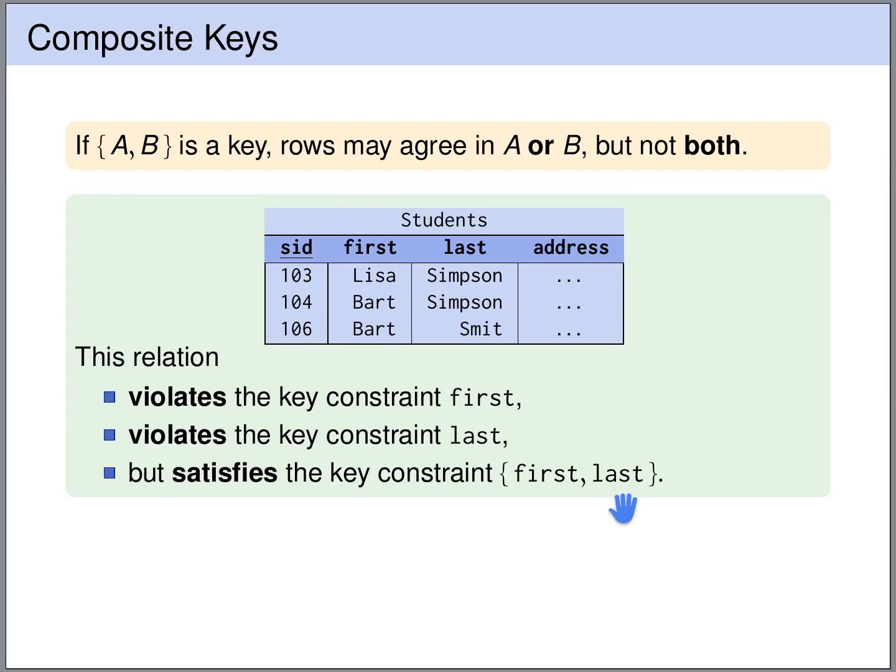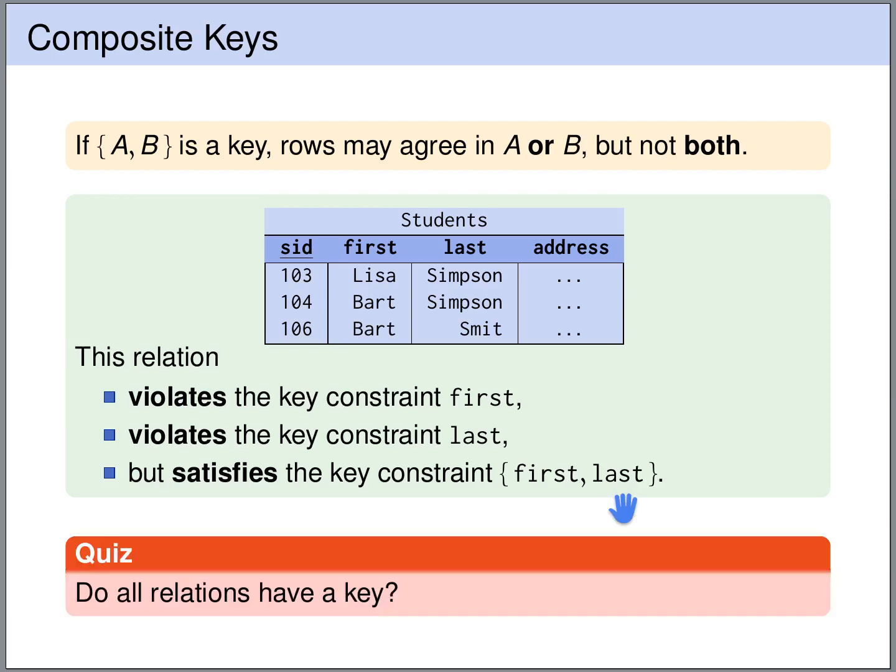This leads to the question whether all relations have a key. The answer is yes. If you have a relation R, take all the attributes of this relation — that set is always a key. Because a relation in the mathematical sense is a set and does not contain duplicate values, if you specify all the attribute values of a tuple, there is only one tuple with those values, so it uniquely identifies the tuple.